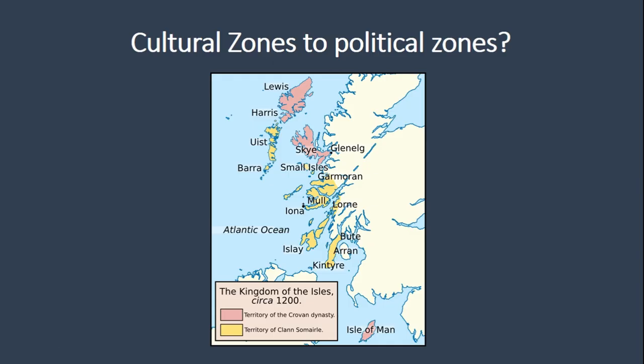To briefly mention historical sources: I found it very interesting that even though you have the Kingdom of the Isles based in Man, there is mention of different dynasties ruling different parts of the islands. Lewis and Harris is thought to have been ruled by a Hiberno-Norse or Norse clan, whereas the Uists were ruled by a Gaelic clan. I think we perhaps see this discrepancy in archaeological culture as well.